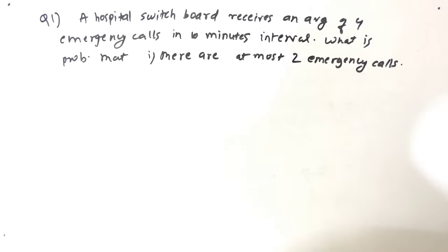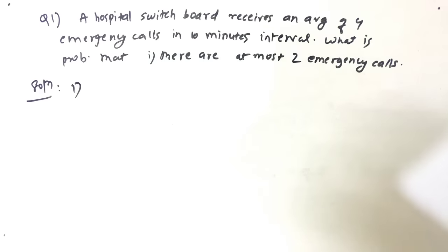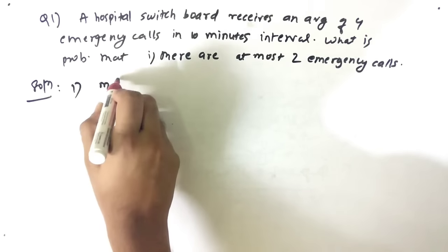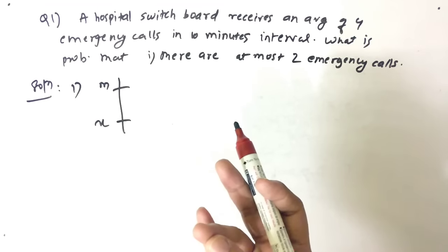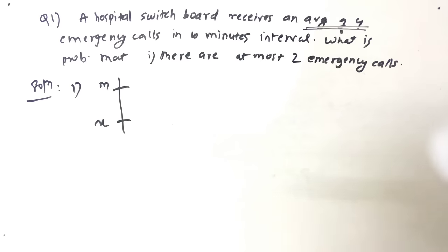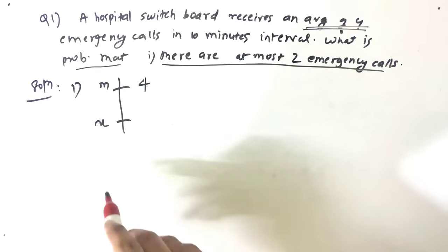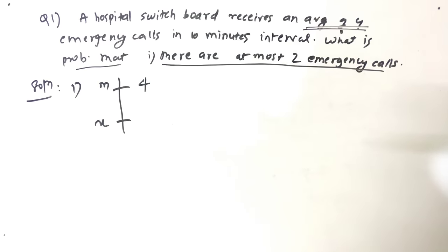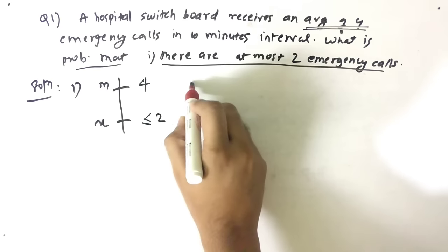Our first example: a hospital switchboard receives an average of four emergency calls in a 10-minute interval. What is the probability that there are at most two emergency calls? We have to find m and x. Since the question mentions an average of four emergency calls, m is 4. x comes from the last line — 'at most two' means less than or equal to two, so x ≤ 2.